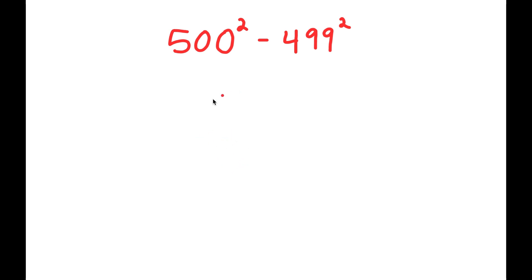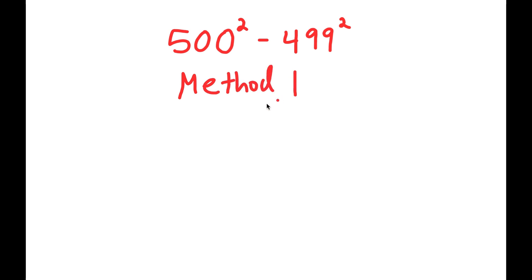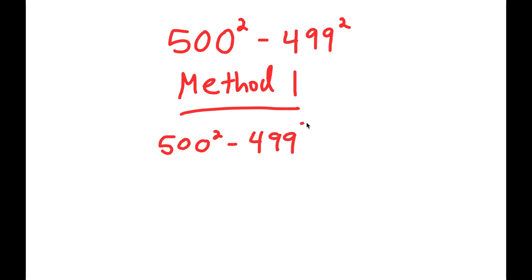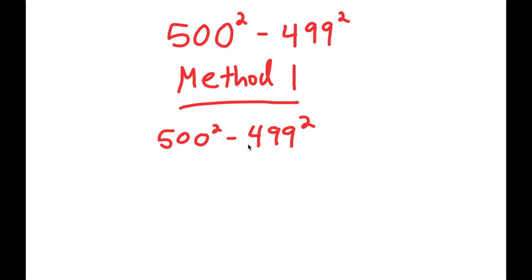In this problem we have 500 squared minus 499 squared. There are two methods to solve this problem.